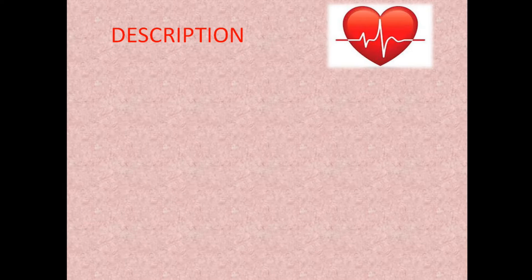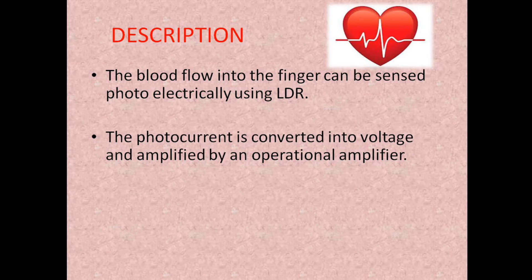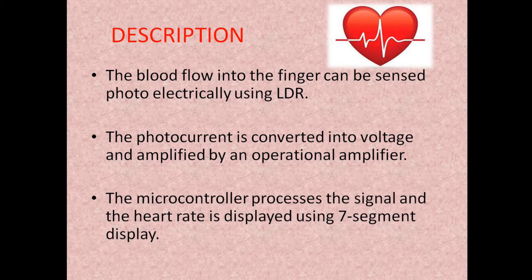Let us now summarize the whole process. First, the blood flowing into the finger can be sensed photo-electrically using LDR. Then, this sensed signal is converted into voltage and amplified by an operational amplifier. Then, this signal is given to a microcontroller to process it and display it using a 7-segment display.